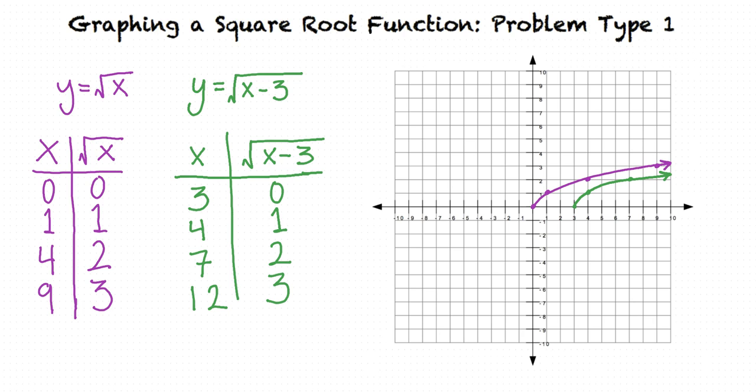So if we add a number within the radical, the graph of the function is shifted to the left. And if we subtract within the radical, the graph of the function is shifted to the right? Exactly.